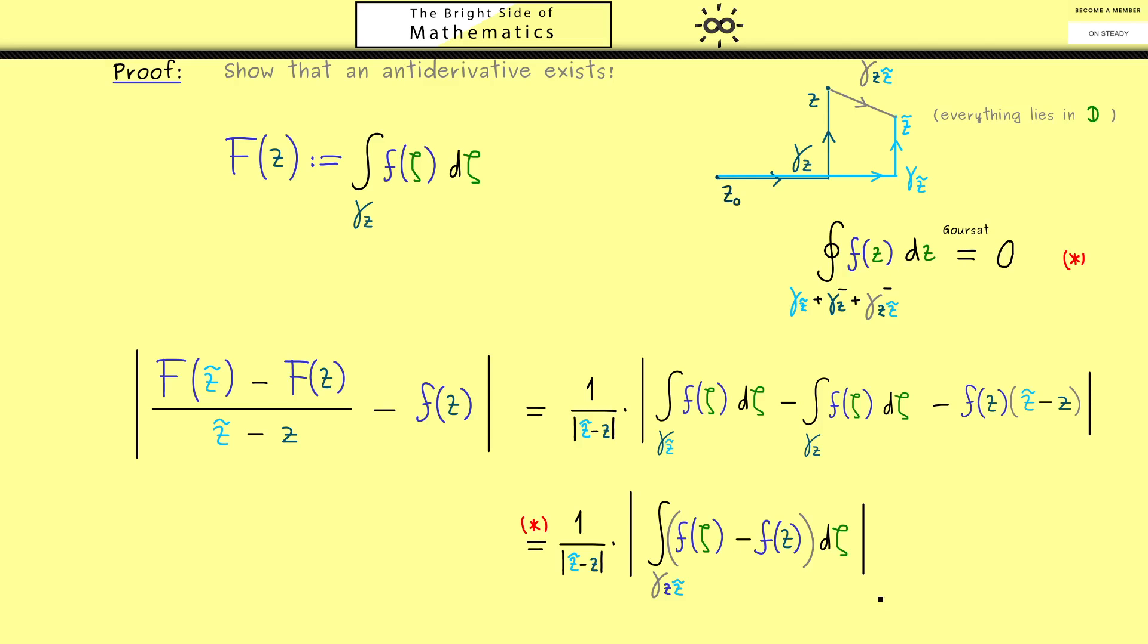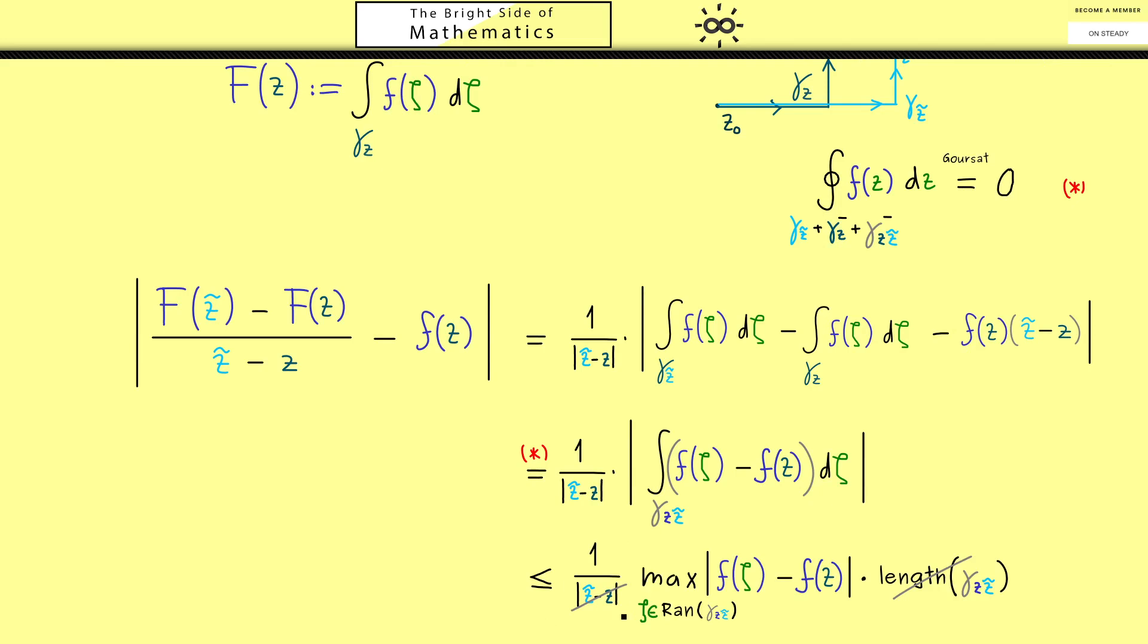And then, using the fact above, we see we can substitute this difference simply with one contour integral along the connection line here. This is what we do, and we also write the third part here as a contour integral. Hence, you see, at this point we have used our former result known as Goursat's theorem. Okay, and usually here at this point you know we use our standard estimate with the length of the curve gamma. And then we have the nice result that we can cancel this absolute value here with the length of our curve. And then it's not hard to see that the remaining maximum here goes to 0 when z tilde goes to z.